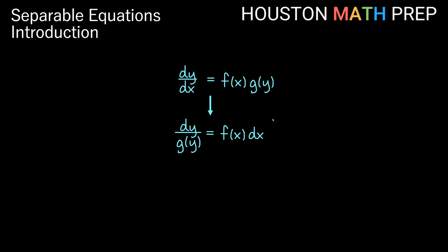Once separated, we simply integrate both sides with respect to the appropriate variable — with respect to y on the left side and with respect to x on the right side. One important thing to remember: if we have some sort of rational expression, dy is always on the top, dx is always on the top, whichever side they are on. We never integrate dividing by dy or dividing by dx, so dy, dx, dt, or whatever differential must be on the top of the fraction on its respective side.